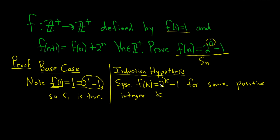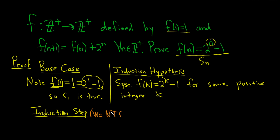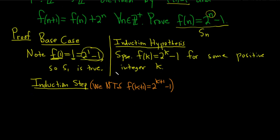Now, assuming the formula is satisfied for some positive integer k, that leads us to the induction step, where we have to show the formula is satisfied for k+1. It's very helpful to write down what you're trying to prove. So I'll note — need to show (NTS), in parentheses since this is not part of the proof itself — that f(k+1) = 2^(k+1) - 1. That's what we have to show.